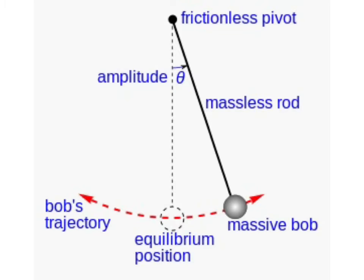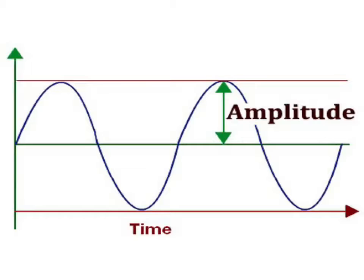Let's discuss amplitude first. Amplitude is the maximum distance which the bob covers away from its initial position. The loudness of sound depends on the amplitude of vibrations of the vibrating object. Greater the amplitude of vibrations, louder the sound will be.